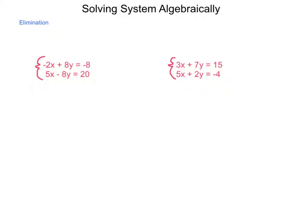In this first system of equations, -2x + 8y = -8 and 5x - 8y = 20, we have the convenience that both of the equations have a form of 8y. One of them is positive, the other one is negative. Because my signs are different, I'm going to add these two equations together. So -2x + 5x is simply 3x. 8y plus -8y is 0, thereby eliminating that. -8 + 20 = 12.